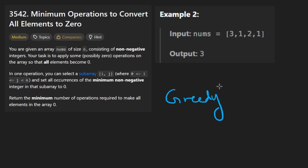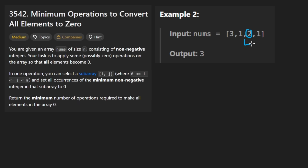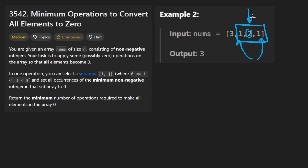You might also consider: which order should we process the elements? Should we do the ones first — the smallest — or maybe the twos? This is a key observation you cannot miss: you have to do the smallest elements first. Why? What if we did the two first? We'd have to pick that subarray alone because we don't want the ones included. The two becomes zero, but now we've created a hole, so we have to do the ones separately — that wastes operations. That's why we do smaller elements first.